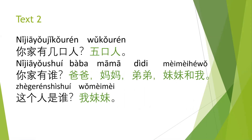你家有几口人？— How many people in your family? 五口人 — five people. 口 is the measure word for people. 你家有谁？谁 means 'who.' So who are in their family? Who are they?